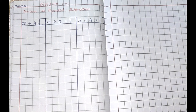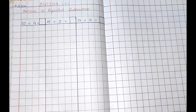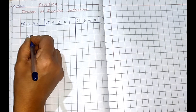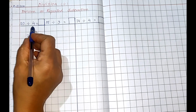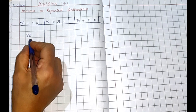Now children, we are doing division as repeated subtraction. How do you subtract? Here is the question: 20 divided by 4. First, let us write 20. Each time we have to subtract 4, until we get 0.